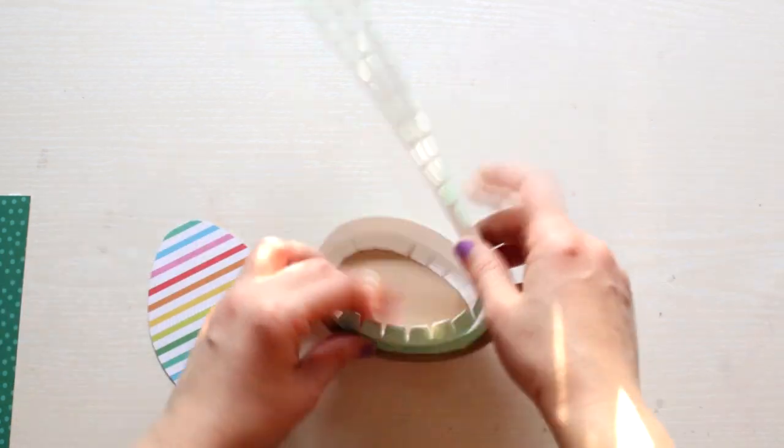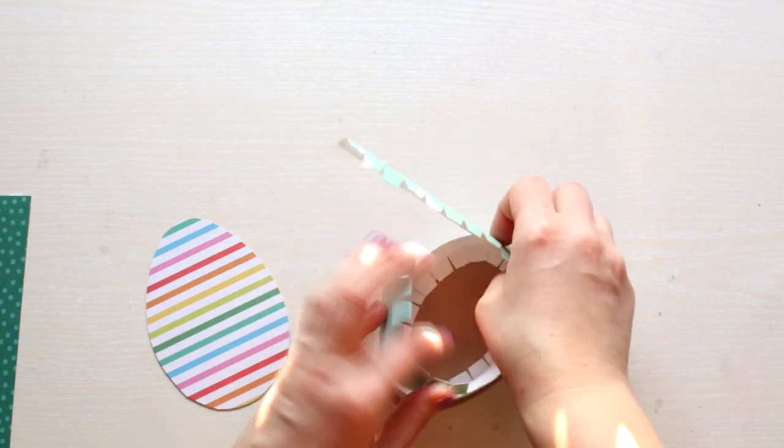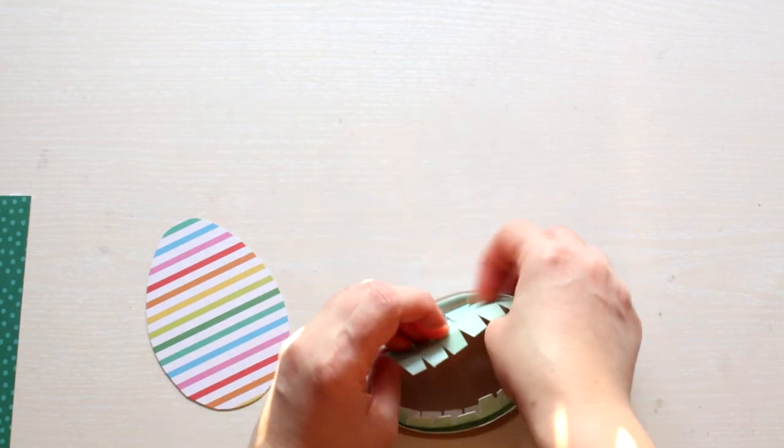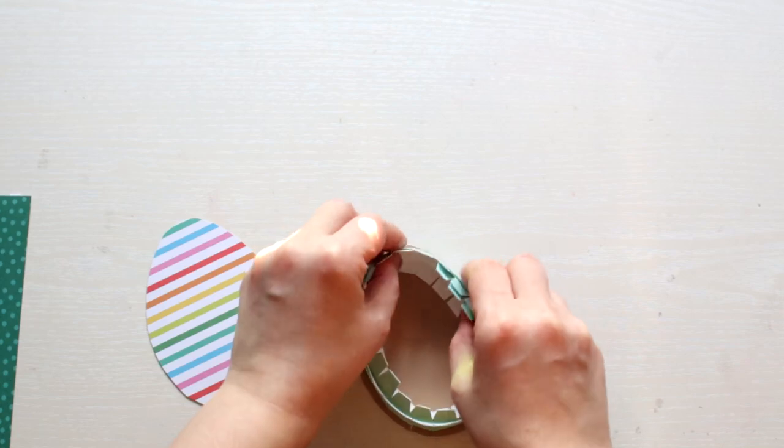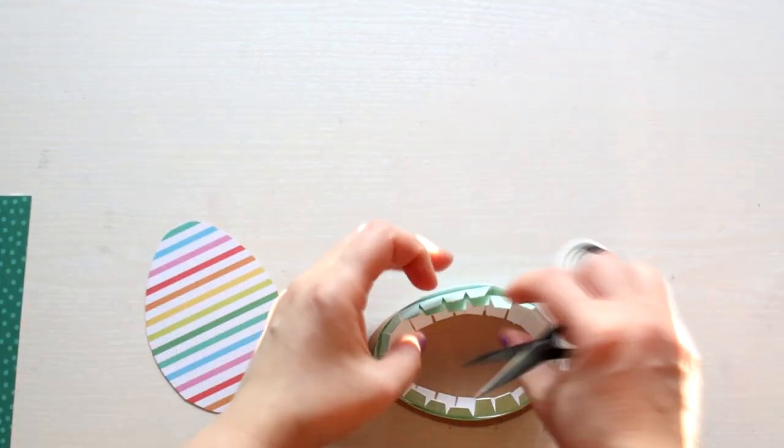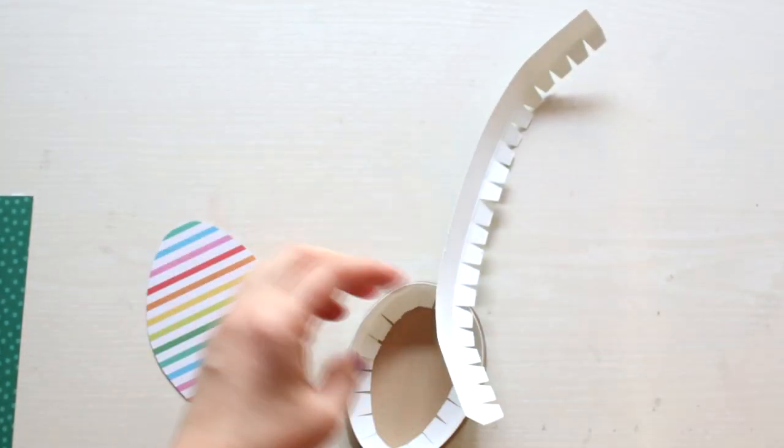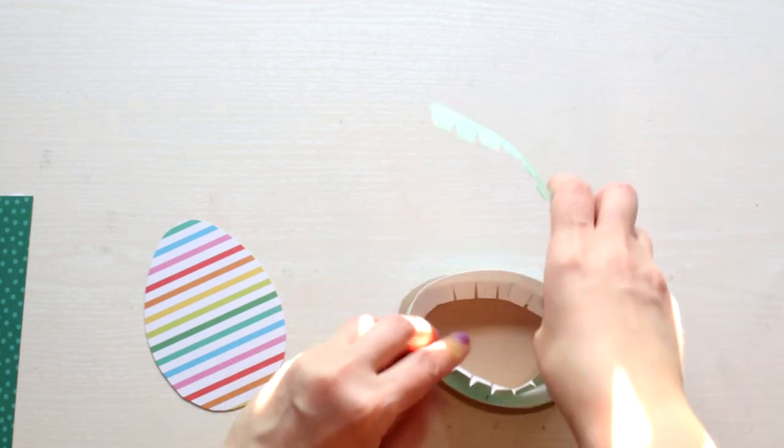This time we are starting with a strip of paper. So take that strip and place it inside the lid. This will help you know exactly how long it should be. So you can trim it now and glue the ends together.